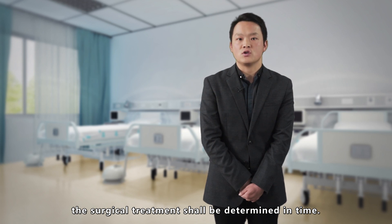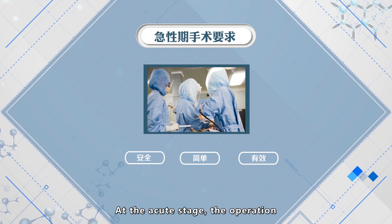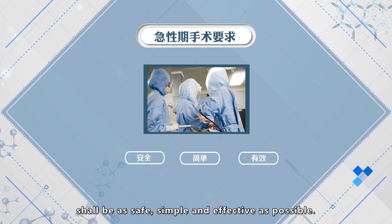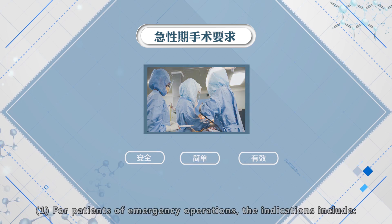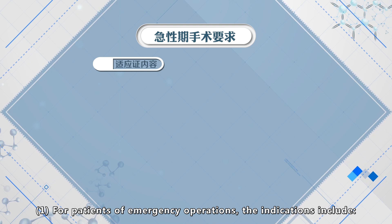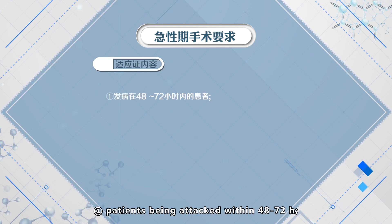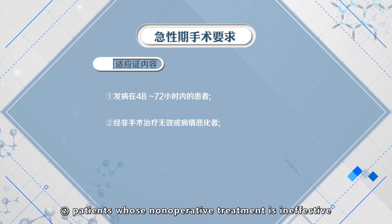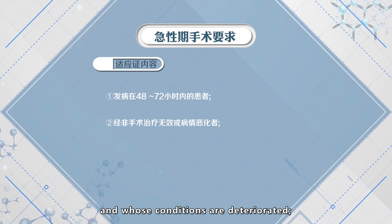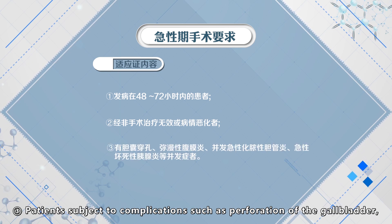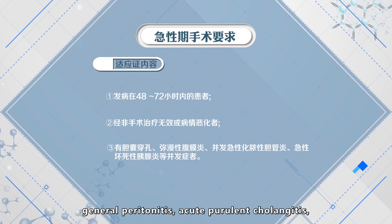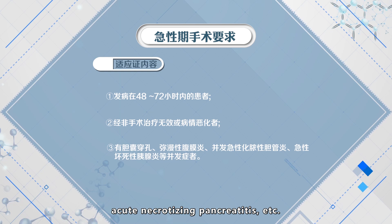In the case of aggravated conditions, surgical treatment should be determined in time. At the acute stage, the operation should be as safe, simple, and effective as possible. Indications for emergency operation include: first, patients attacked within 48 to 72 hours; second, patients whose non-operative treatment is ineffective and whose conditions have deteriorated; third, patients with complications such as perforation of the gallbladder, acute purulent cholangitis, or acute necrotizing pancreatitis.